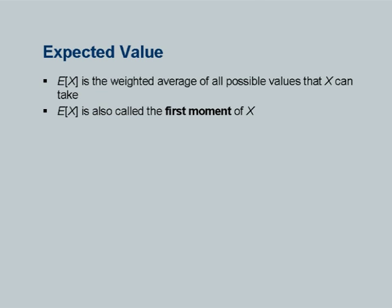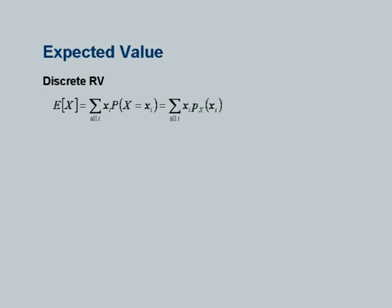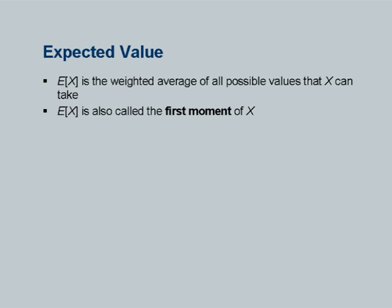Essentially, the expected value is the weighted average of all the values that the random variable X can take. The weight is the probability mass function, which is equivalent to frequency. So we weight each value x_i by its frequency and take a weighted average. The expected value is thus nothing but the weighted average of all values X can take, which holds for both discrete and continuous random variables.